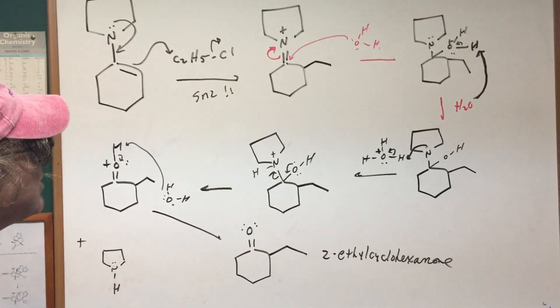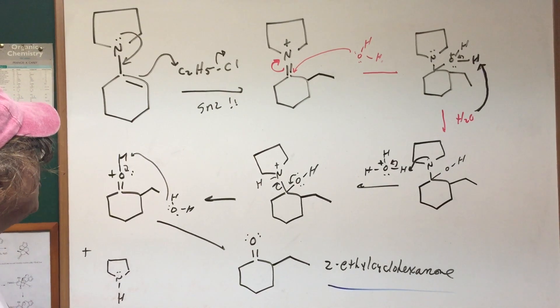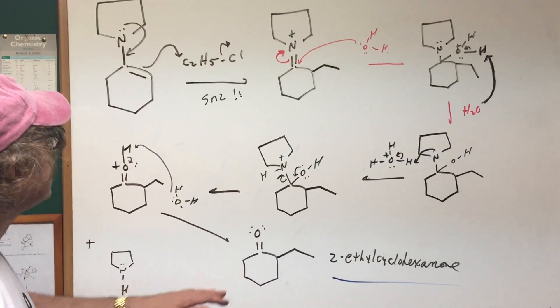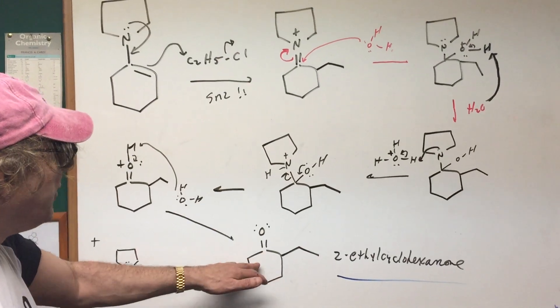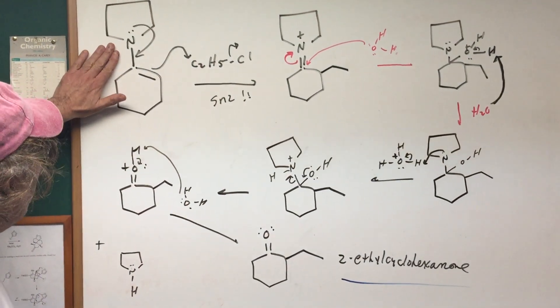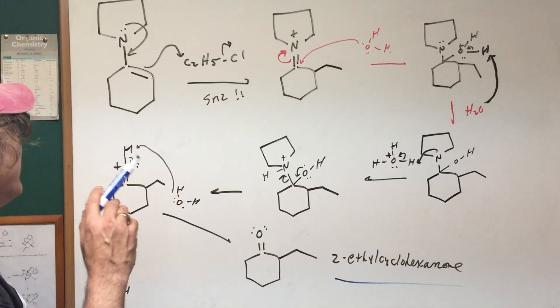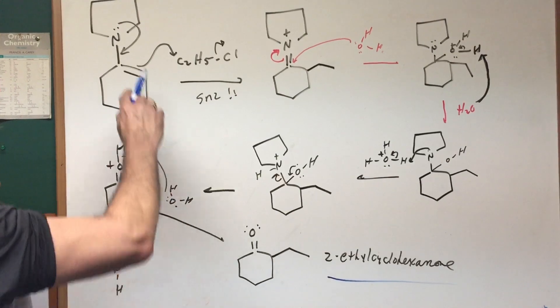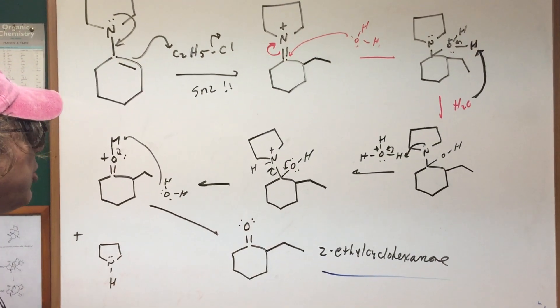And we form 2-ethylcyclohexanone. So as you can see, what I've done is I alkylated a ketone. In this case it was cyclohexanone. I transformed it into an enamine, I then used that enamine and I added an ethyl group and I was able to alkylate my ketone.